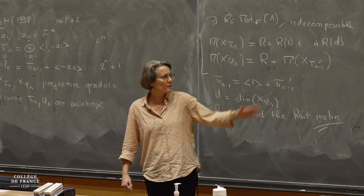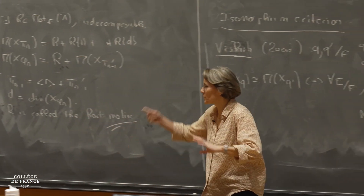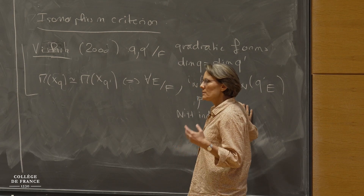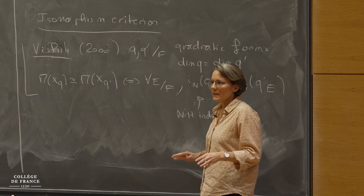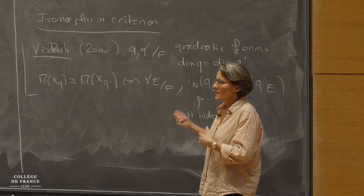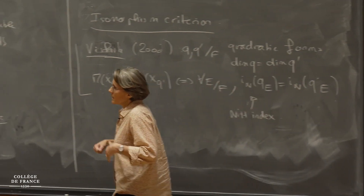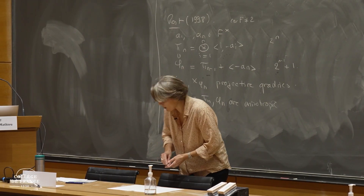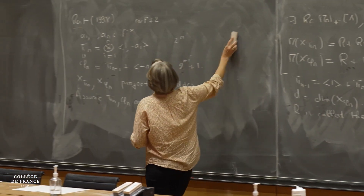Vishik proved the result using Voevodsky's key motifs. For quadrics there is a theorem due to Olivier Haution which more or less says you can work with Z coefficients or Z mod 2 coefficients and it's the same story. From now on, I'm going to switch to finite coefficients, and I will explain why — you can think of this with Z or Z mod 2 coefficients for quadrics.